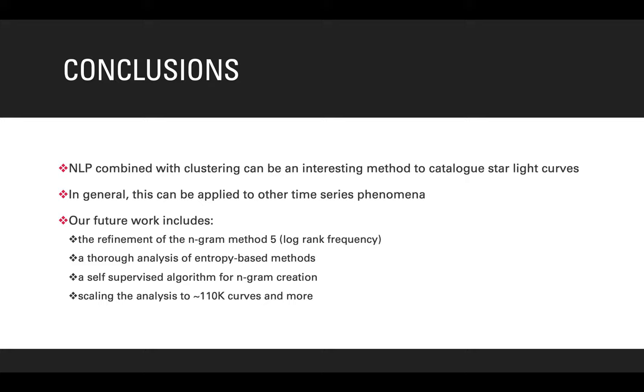Our project is only in a preliminary stage, but we wanted to show a proof of concept for a new methodology based in natural language processing that we can use to catalog and categorize time series phenomena. Our future work includes a refinement of the n-gram method five, an analysis of the co-occurrences and similarities of the n-grams within the six corpora, and a more thorough analysis of the entropy-based methods shown here, as well as a self-supervised algorithm for n-gram creation where instead of us thinking or giving the methods for how to create the n-grams, we will be discovering a method for n-gram creation. Additionally, we will be looking at scaling up the analysis to include significantly more light curves that would diversify the stars dictionary, both from Kepler and TESS missions. This will help create complete taxonomies and dictionaries of the stars.